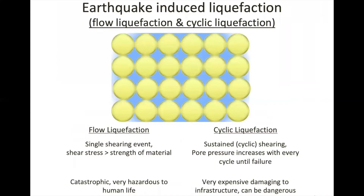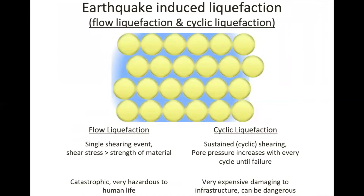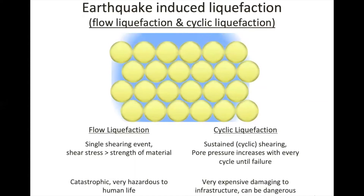An earthquake causes a series of back-and-forth ground motions which can be described as many cycles of shearing and stress reversals. With a single unidirectional loading event like a landslide there's only really one opportunity for liquefaction to be triggered. But during an earthquake the prolonged ground shaking causes pore pressure to build up with every cycle without draining, and enough cycles of this can overcome the strength of the soil and cause liquefaction. This is why cyclic liquefaction is more easily achieved during an earthquake than flow liquefaction and generally has a less catastrophic outcome.